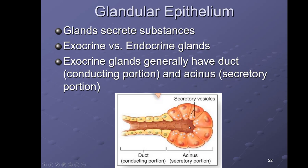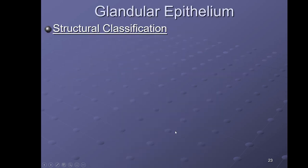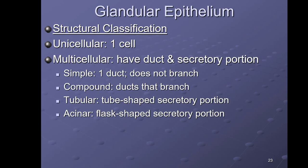Structurally we can classify exocrine glands as unicellular — one cell, such as a goblet cell — or multicellular, which has a duct conducting portion and an acinus, which is the part that actually secretes the substance.